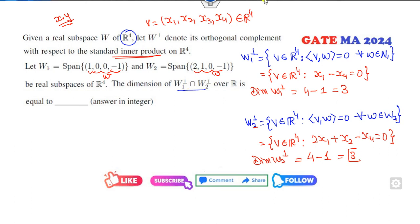Now your target is to find the intersection. So what is the intersection of this? That means collection of all those elements in R⁴ such that the first condition x₁ - x₄ = 0 is satisfied and the second condition 2x₁ + x₂ - x₄ = 0. Now what is the meaning of dimension? That means you have to find the number of elements, that means span.